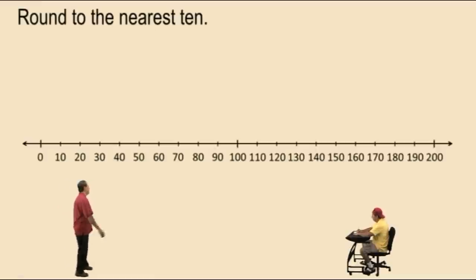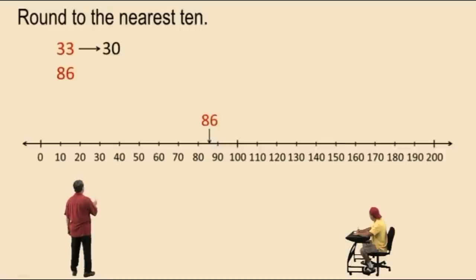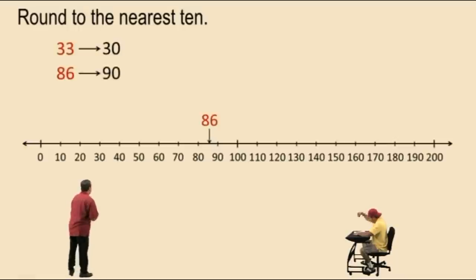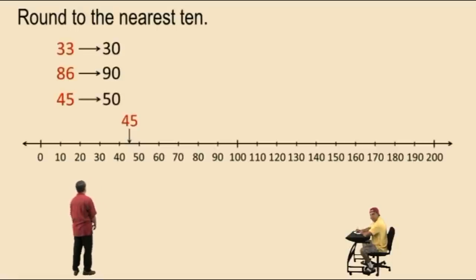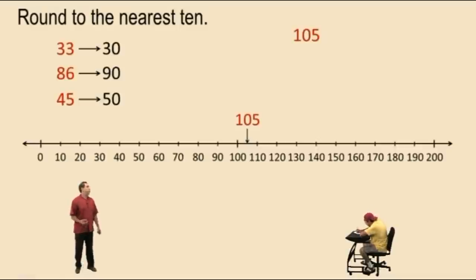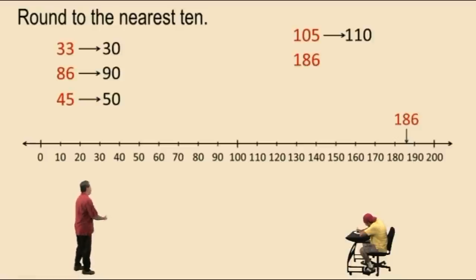Let's round to the nearest ten using larger numbers. 33 is right in between 30 and 40 but it's closer to 30, so 33 rounds to 30. 86 is closer to 90, so 86 rounds to 90. 45 is right in the middle of 40 and 50 — when we're in the middle we round up, so 45 rounds to 50. 105 is right in between 100 and 110 — when we're in the middle we go to the right — so 105 rounds to 110.